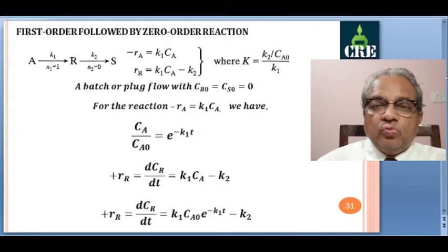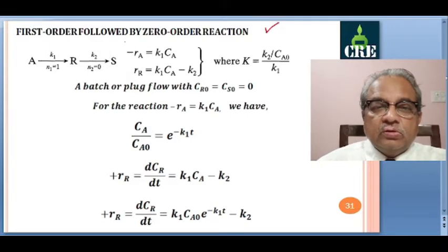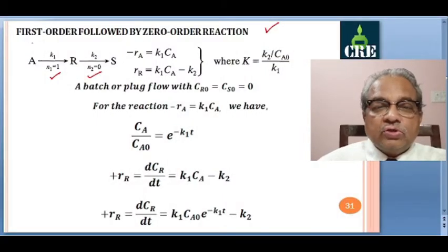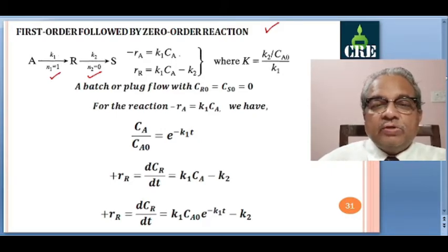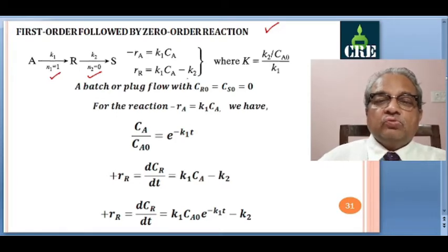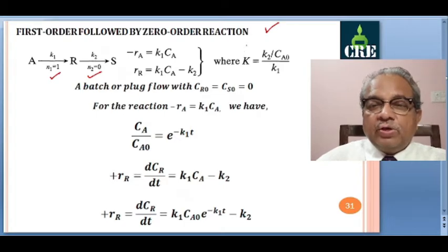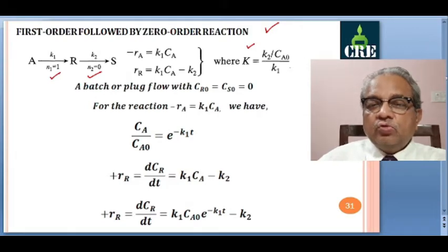Now we will see two special category reactions and their concentration distributions. First: A→R→S, first order followed by zero order. First reaction: −rA = K1·CA (order 1). Rate of formation of R: K1·CA − K2·CR (where zero order means CR^0 = 1, so simply K2). We define a parameter K = K2/(K1·CA0). For a batch or plug flow reactor, with CR0 = CS0 = 0 initially.